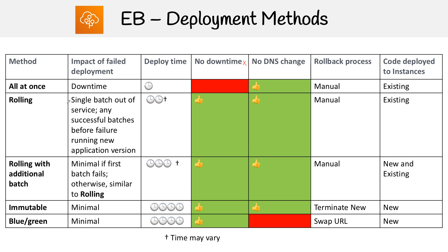Next we have rolling, which mitigates the downtime problem. If you have four servers, it updates them in batches — it takes the first two out of service, updates them, puts them back, then moves to the next batch. The trade-off is reduced capacity, so if you always need four servers to handle your critical workload, rolling is not ideal. That's when you'd want to use rolling with additional batch.